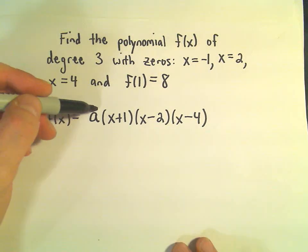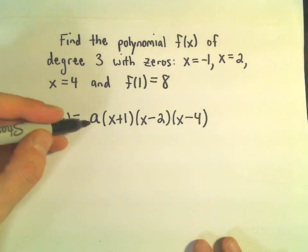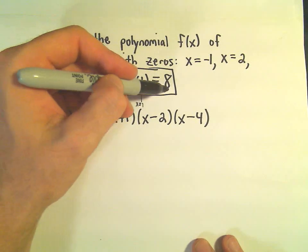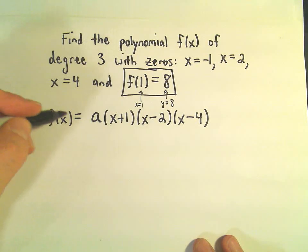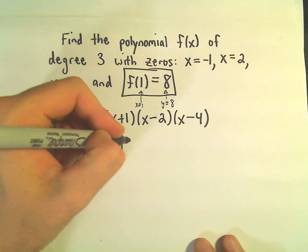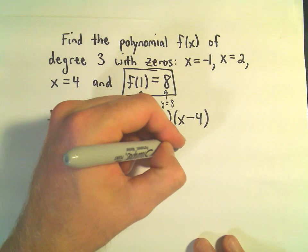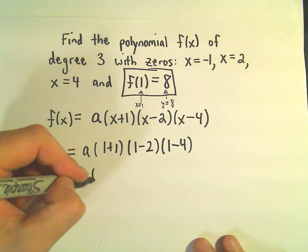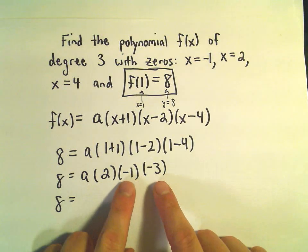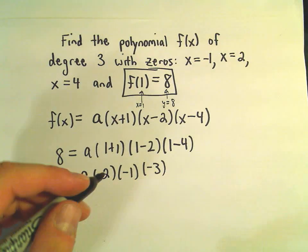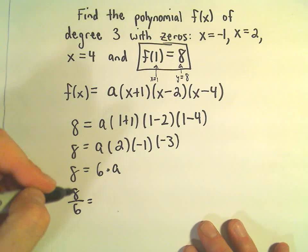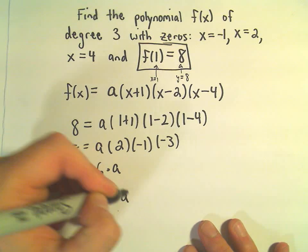At this point, all we need to do is figure out our a value. So I'm going to solve for a by using this extra point. This says if you plug in x equals 1, we get out the y value of 8. So I'm going to put 8 on the left side, and then plug 1 in everywhere there's an x. We get 1 plus 1, 1 minus 2, 1 minus 4. That gives us 2 times negative 1 times negative 3. Negative 1 and negative 3 give positive 3, times 2 is 6. So we get 6 times a. Dividing both sides, we get 8 over 6, which simplifies to 4 thirds — that's our a value.